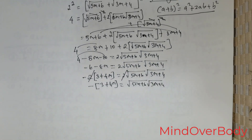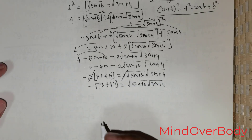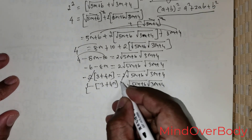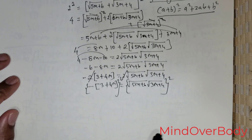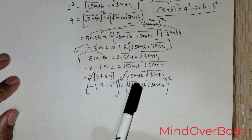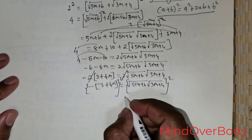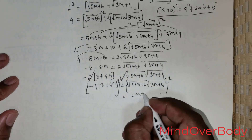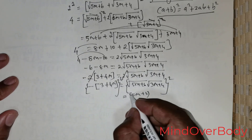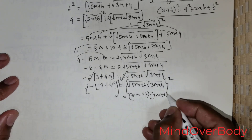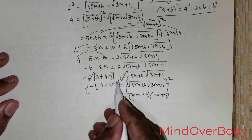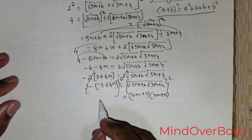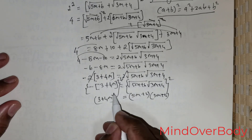Now I would like to get rid of this radical sign again, so I square both sides. When I square both sides, the radical sign gets neutralized, giving me 5m plus 6 times 3m plus 4 on the right hand side. On the left hand side, the negative sign is raised to the power of 2, so it gets neutralized, giving me (3 plus 4m) raised to the power of 2.